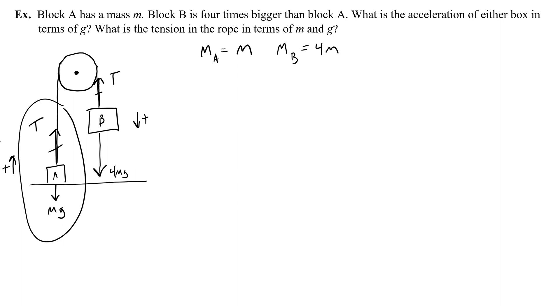When it comes time to write the equations for A, I'm going to have T minus MG equals MA times the acceleration, but remember MA is M, so I'm just going to write M times A. That's the first equation. The second equation for B is going to be 4MG minus T. And again, that would equal MB times the acceleration, but MB is 4M, so I'm going to write that as 4M.